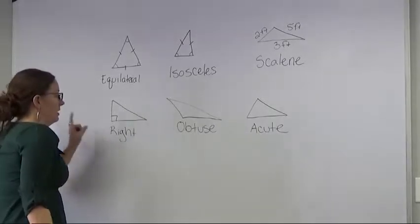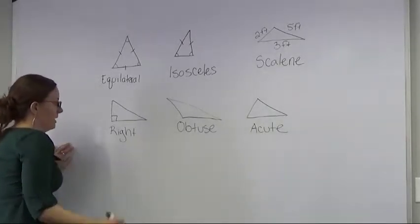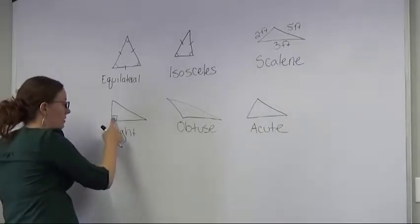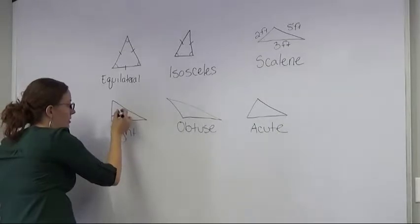A right triangle means that there is at least one and only one 90 degree angle, and that's usually indicated by a square, or the degree measure will be listed and it will say 90 degrees.